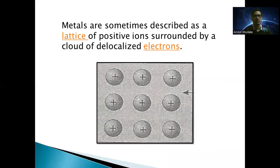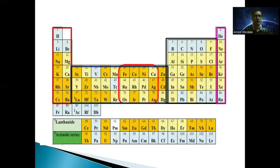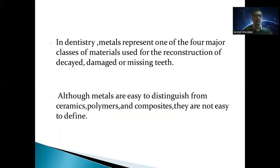Metals are sometimes described as a lattice of positive ions surrounded by a cloud of delocalized electrons. On the periodic table, a diagonal line drawn from boron (B) to polonium (Po) separates the metals from the non-metals, as clearly shown in the periodic table diagram.